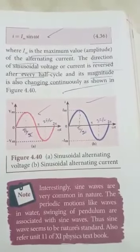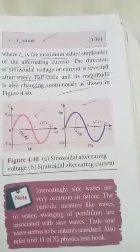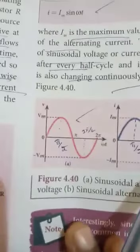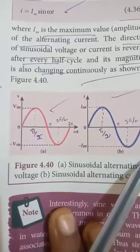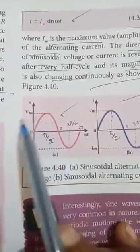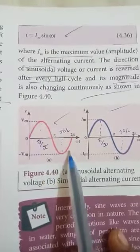The direction is reversed, and at the same time the magnitude of voltage and current also changes continuously. This is the sinusoidal alternating voltage and this is the sinusoidal alternating current. The graph is drawn with ωt on the x-axis and voltage on the y-axis. This is the peak voltage Vm in the positive half, and the negative peak is minus Vm.